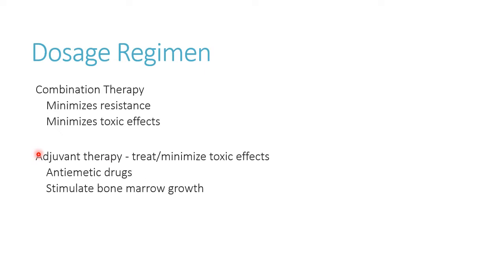When treating cancer, combination therapy is used very frequently — rarely do patients receive just one chemotherapeutic drug. Using multiples provides additional synergy: we can attack multiple mechanisms and get better cell kill than with either drug alone, similar to using two antibiotics with different mechanisms. Combination therapy can also help reduce resistance, because cancer cells do become resistant over time just like bacteria. Using combinations can overcome resistance and help minimize toxicities by allowing lower doses of each individual drug.